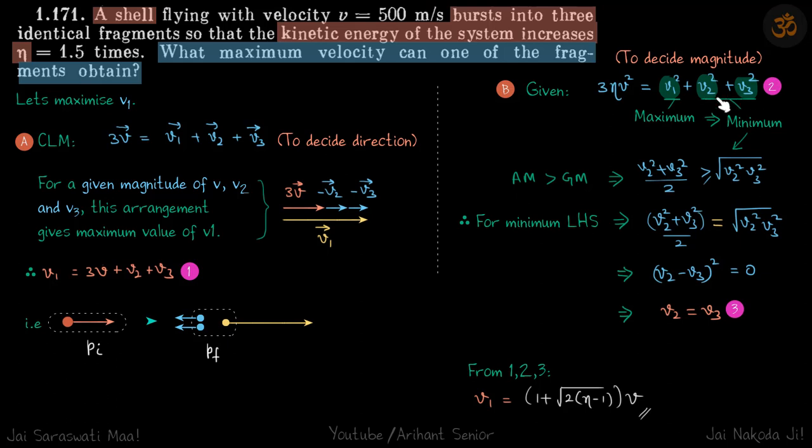So we need to minimize v2 squared plus v3 squared. For that we can use the AM is greater than GM, which means (v2 squared plus v3 squared)/2 is greater than or equal to the square root of v2 squared times v3 squared.